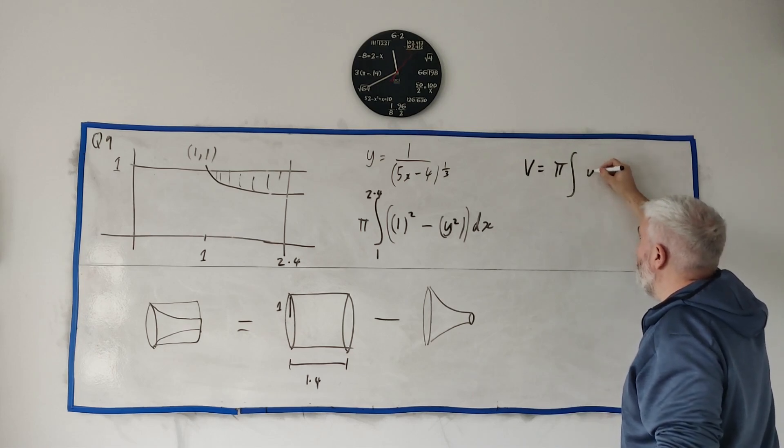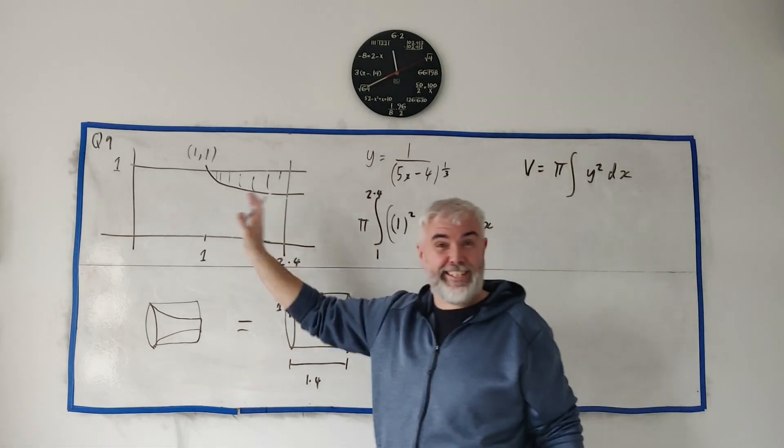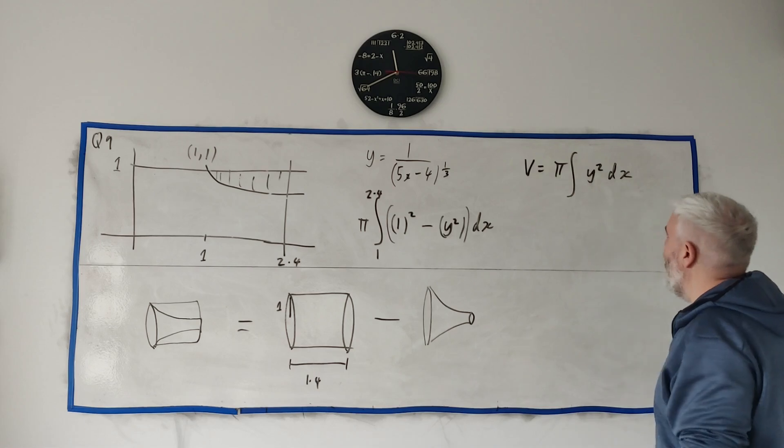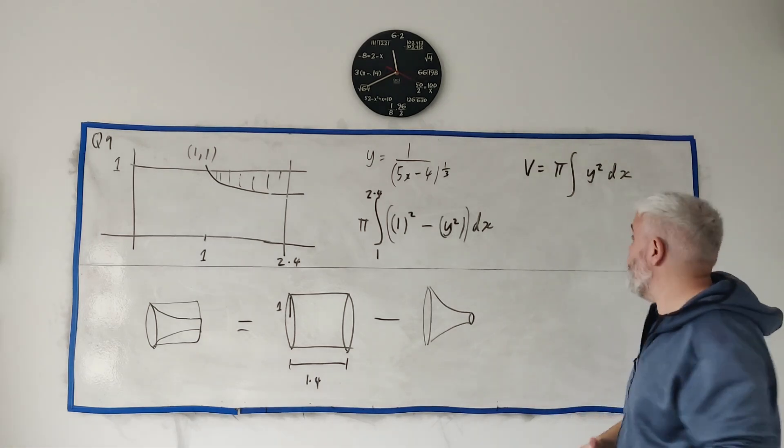And that one you are expected to remember a bit more - that the volume is equal to pi times the integral of y squared dx. Or if you go the other way around the x-axis it's pi x squared dy.